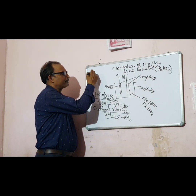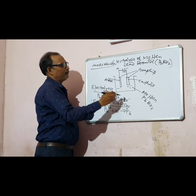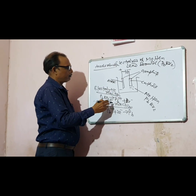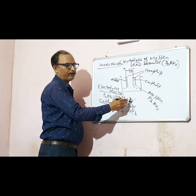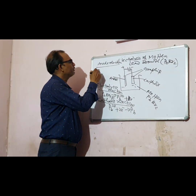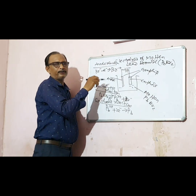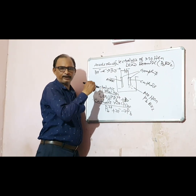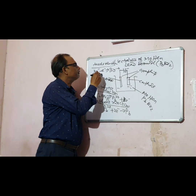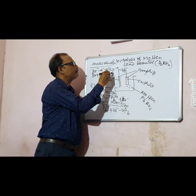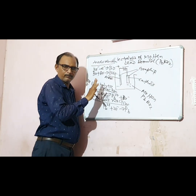Then anode reaction. Which ion will migrate to the anode? Br- will migrate to the anode. So Br- minus e- gives Br, and since bromine is diatomic, Br + Br gives Br2. So reddish-brown bromine vapor will be evolved at the anode.